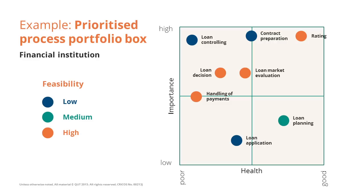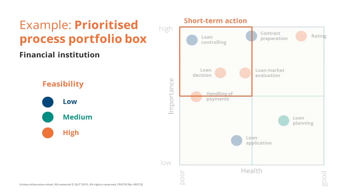The top left quadrant is for processes that require short-term actions. These are processes that are strategically very important — like contract preparation or loan decision — but they have poor health and suffer from poor performance.